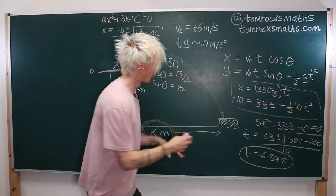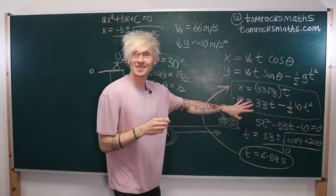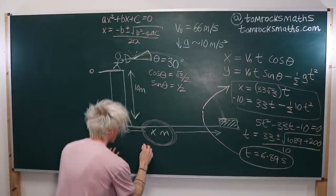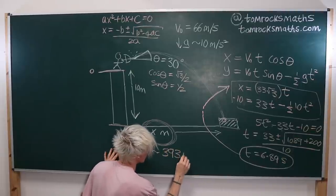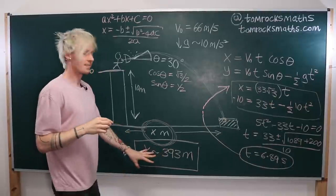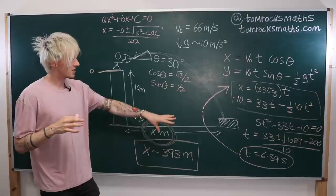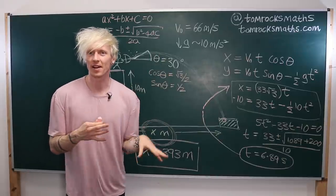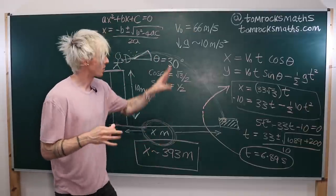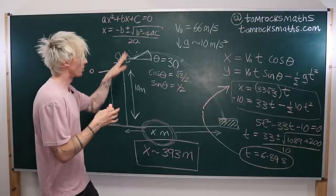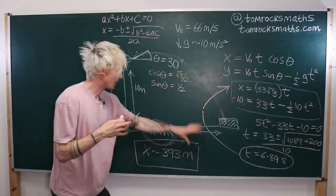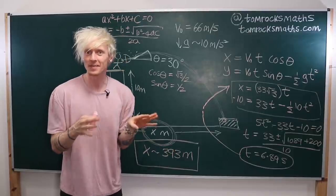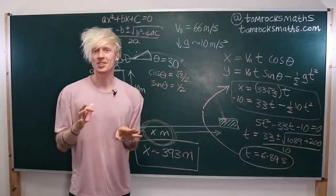Now that we have the time, we plug into x = 33√3 · 6.89, giving x ≈ 393 meters. So once the battering ram is around 400 meters from the castle wall, that's when you want to start firing. We've used approximations — neglected air resistance, approximated gravity, the angle might not be perfect — but it tells you not to leave it too late; fire when the ram is around 400 meters away.